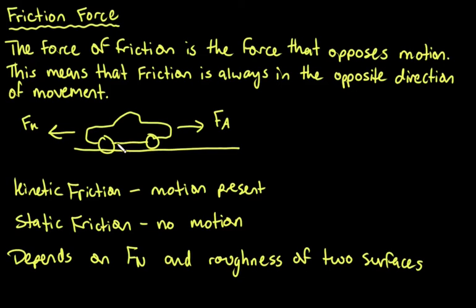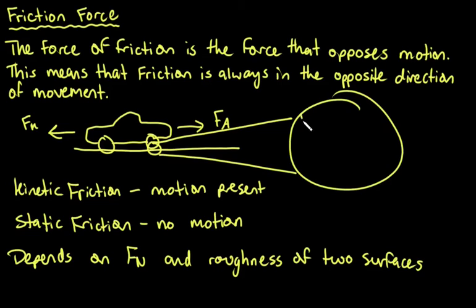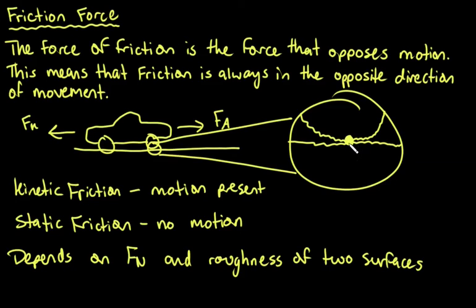Let's take the example of the tire and the asphalt. If we were to zoom in, we would see that the tire has grooves in it to help it grip the asphalt, and the asphalt is actually pretty rough as well. This forms a really good amount of friction, which is required for moving our car. We actually use friction to move our cars.